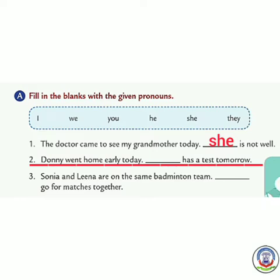Number 2: 'Donny went home early today. Dash has a dash tomorrow.' Donny is the name of a boy, so we use 'he'. Answer: 'Donny went home early today. He has a dash tomorrow.'